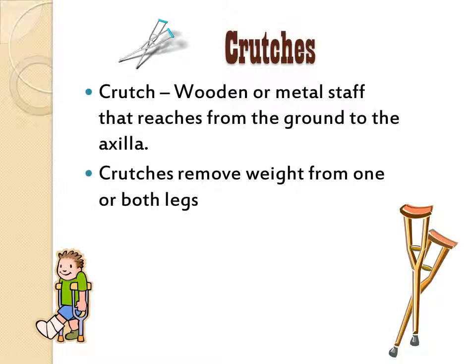There is also a variety of crutches available. Axillary is the most common, and that is what we have pictures of here. The Lofstrand crutch has a hand grip and a metal band that will actually fit around the client's forearm, for clients who are not able to grasp the crutch in the normal fashion. There is also a platform style that has a horizontal trough where the client's forearm rests and a vertical handle for them to grip. When teaching a client to use crutches, we encourage them to never place their body weight on the axilla because it can actually injure the axilla or the radial nerve.